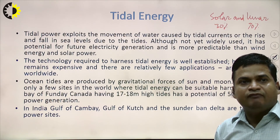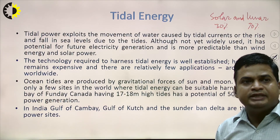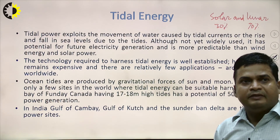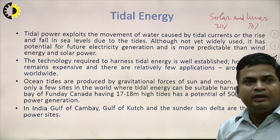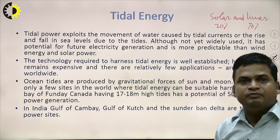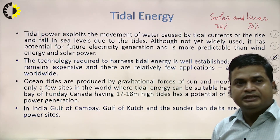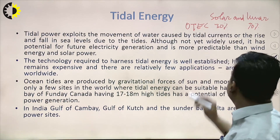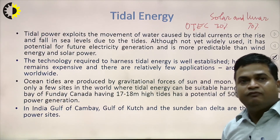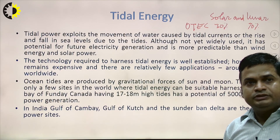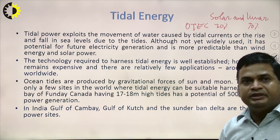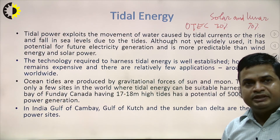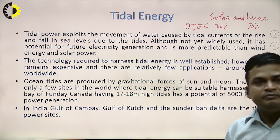Ocean tides are produced by the gravitational forces of the sun and moon. There are only a few sites in the world where tidal energy can be suitably harnessed. In India, no source of tidal energy is available yet. The Bay of Fundy, Canada, having 17–18 meter high tides, has a potential of 5000 megawatt of power generation. There is also a difference between tidal energy and ocean thermal energy conversion (OTEC). In ocean thermal energy, there is a source — the surface water at higher temperature — and a sink, the water below at lesser temperature, and this temperature difference is utilized for useful work.